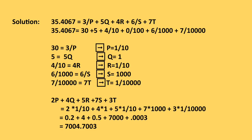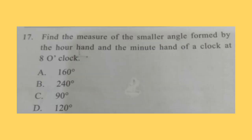So let's start with question 16. If 35.4067 is equal to 3/P plus 5Q plus 4R plus 6/S plus 7T, then the value of 2P plus 4Q plus 5R plus 7S plus 3T is. You can pause the video and calculate it. Try to find out the answer yourself. Correct answer is option B, 7004.7003. Here is the solution, you can check it.